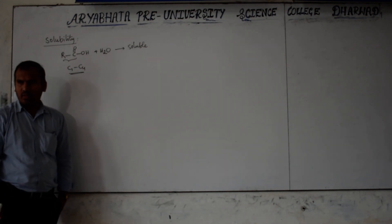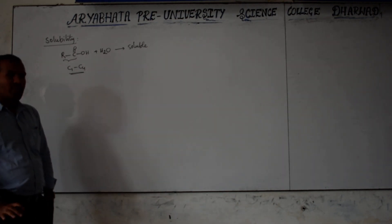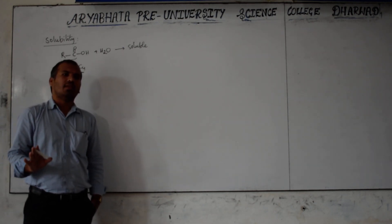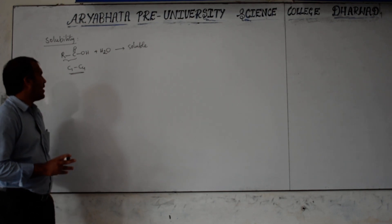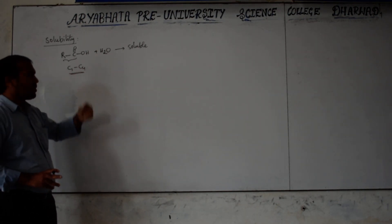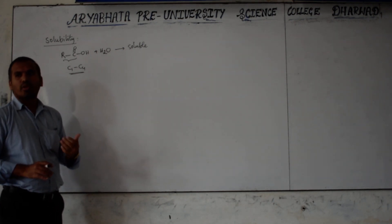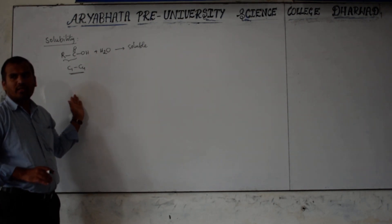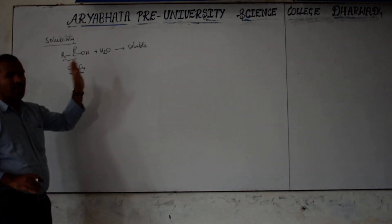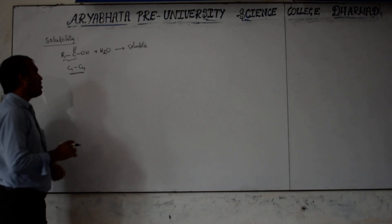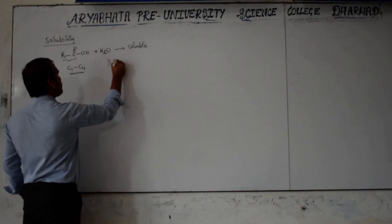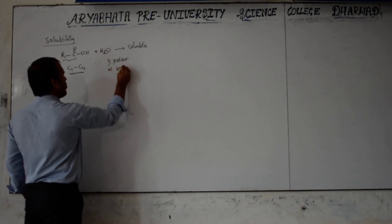In some books it is given up to 5 carbons — all organic compounds up to 5 carbons are easily soluble in water. But for our textbook, up to C4 carbons: C1 is formic acid, C4 is butanoic acid. Formic acid, ethanoic acid, propanoic acid, and butanoic acid are all soluble in water. They are soluble because they are polar and form hydrogen bonds.